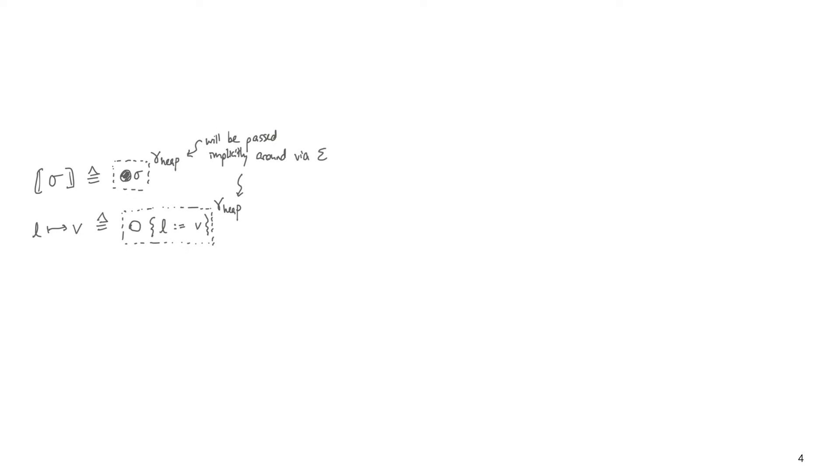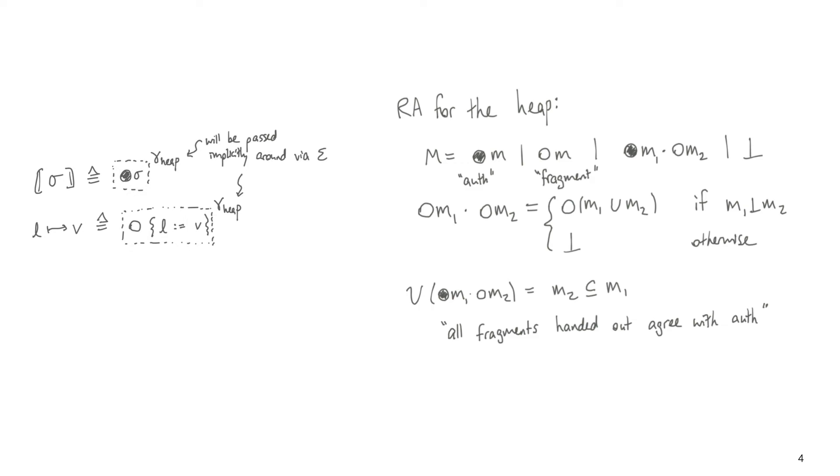To give you a better intuition for how the state interpretation works, I'll show a simple example of the state interpretation for just the heap. Both the state interpretation and maps-to definitions are just ownership of a particular ghost variable. So to understand these definitions, what I'll do is I'll leave these definitions on the slide while I explain what that resource algebra is.